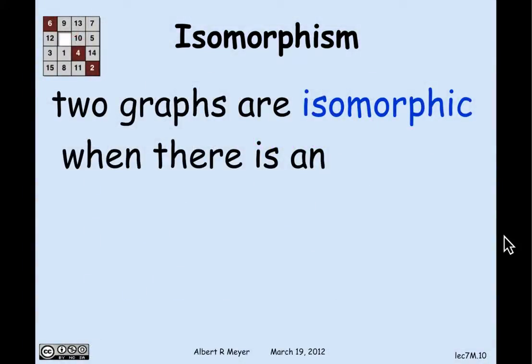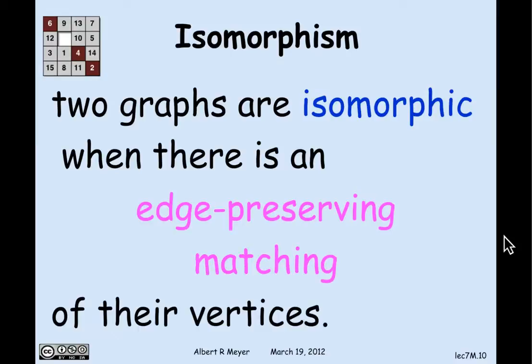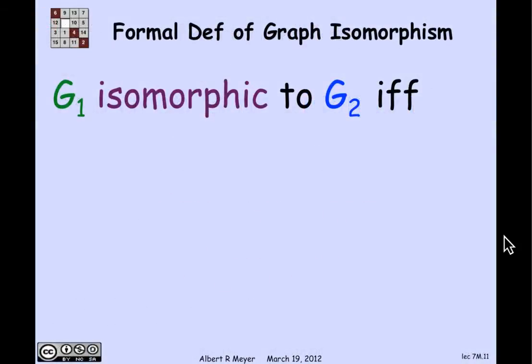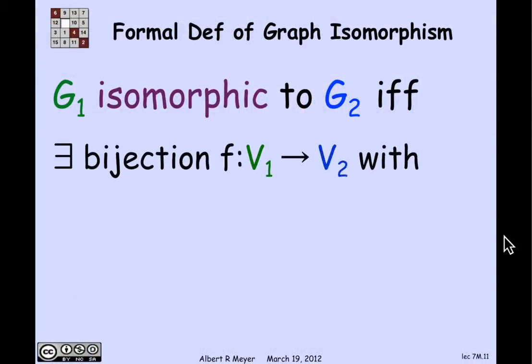And the precise definition of isomorphic is that they're isomorphic when there's an edge-preserving matching between their vertices. Matching means bijection. The formal definition is g1 is isomorphic to g2 if and only if there's a bijection from v1, the vertices of g1, to v2, the vertices of g2.